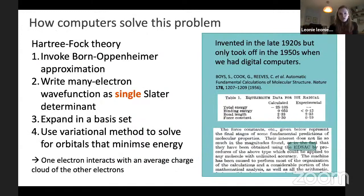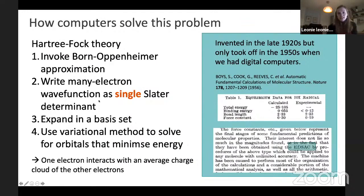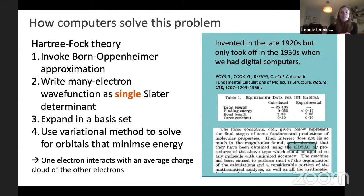So how do computers solve this problem? The general approach is called Hartree-Fock theory — it's quite old, invented in the late 1920s, but really only took off when we had digital computers because it's quite complicated to do by hand. In Hartree-Fock theory, we first invoke the Born-Oppenheimer approximation, which says that because electrons move so much faster than the atomic nuclei, we can assume the nuclei to be static. We then write the many-electron wave function as a single determinant — a so-called Slater determinant. It's important that it has this determinant form because electrons are fermions and you need anti-symmetry: the wave function must change sign when you exchange two electrons.